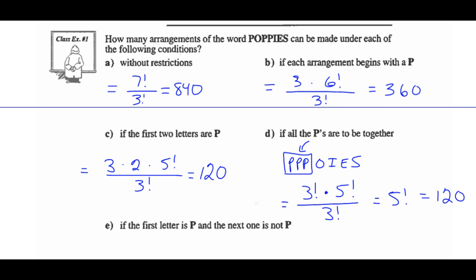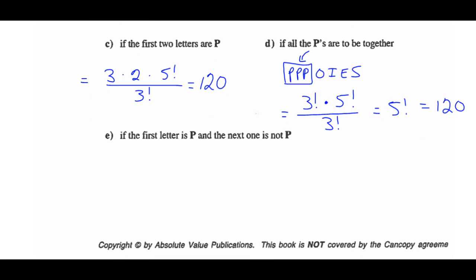Part E — if the first letter is a P and the second is not a P. The first letter: 3 choices (P's). The second letter: 4 choices (O, I, E, S — not P). Now 5 letters remain, arranged in 5 factorial ways. Divide out the 3 like P's by 3 factorial. So 3 times 4 times 5 factorial divided by 3 factorial gives us 240 ways.